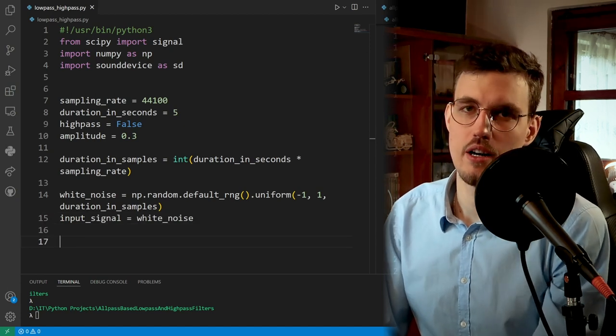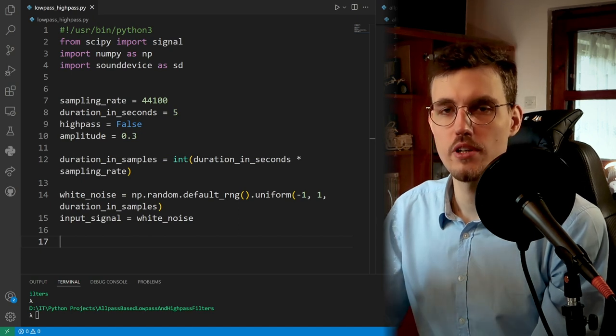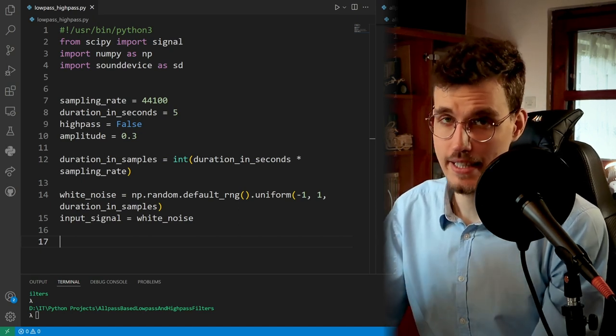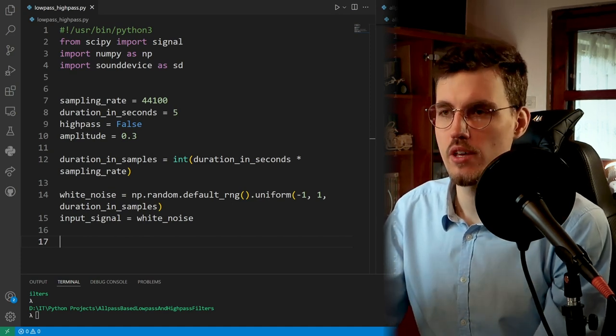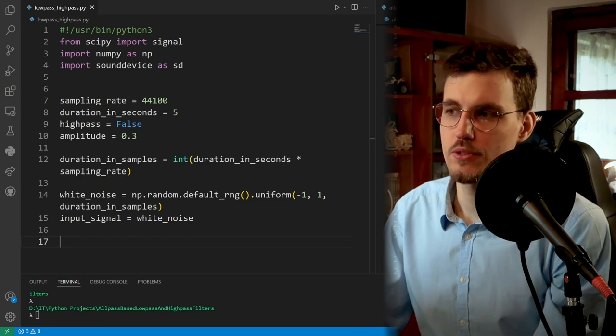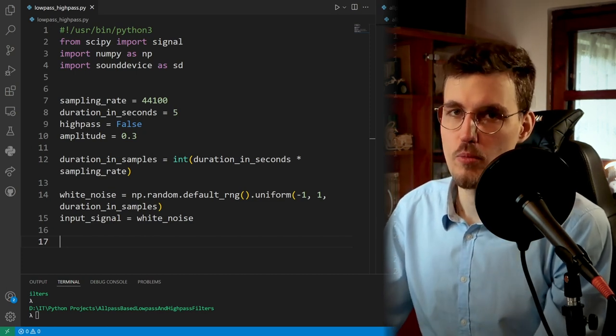Okay, now we'll define our cut-off frequency. And in order to show that we can control the low-pass filter in real time, we'll alter this cut-off frequency with each sample. And also it will nicely show us the effect of the low-pass filter.